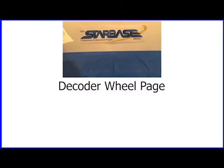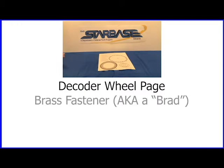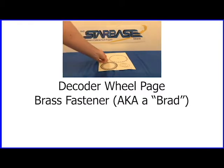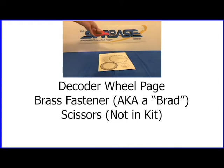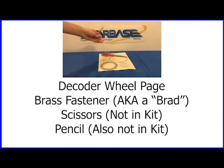From your science kit, you'll need the decoder wheel page and the brass fastener, also known as a Brad. On top of that, you'll need a pair of scissors and a pencil.